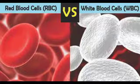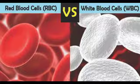The spleen is called the graveyard of RBCs. The process of destruction of RBCs is called hemolysis. After destruction, the iron part is retained by the liver and the rest is excreted as bilirubin. The spleen also stores a large amount of RBCs for emergency requirements and is therefore also called the blood bank of the body.